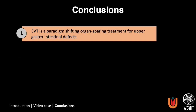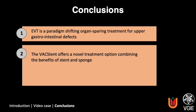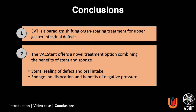In conclusion, endoscopic vacuum therapy is a paradigm-shifting, organ-sparing treatment for upper gastrointestinal defects. The VaxStent offers a novel treatment option combining the benefits of the stent and sponge, where the stent seals the defect and allows for oral intake, while the sponge prevents dislocation and provides the benefits of negative pressure wound therapy.